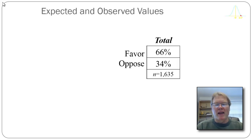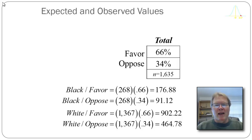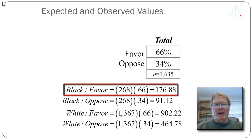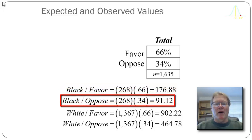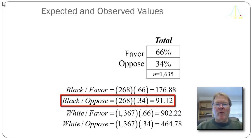If I know the number of black respondents and the number of white respondents, I can calculate this in a straightforward fashion. I had 268 black respondents, and if 66% of them favor capital punishment, I should observe approximately 176.88 black respondents who favor capital punishment — that's an expected value. Similarly, for black respondents who oppose, 268 multiplied by 0.34 gives an expected cell frequency of 91.12.